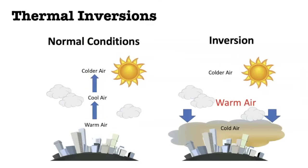Next up is thermal inversions. Under normal atmospheric conditions, air close to the surface of the earth is warmer, and as we go toward space, the air gets colder. With a thermal inversion, warm air and cool air flip-flop, trapping cold air close to the earth's surface with warm air above it. The big problem is that when an inversion occurs, any pollution in the atmosphere — particularly smog or particulates from coal burning — tends to get trapped beneath the warm air, with nowhere to go, and can cause devastating effects.